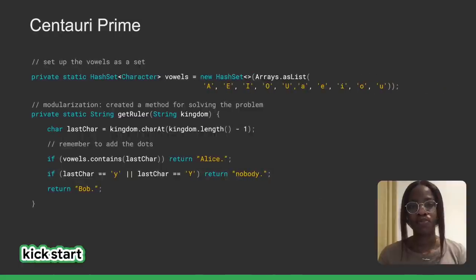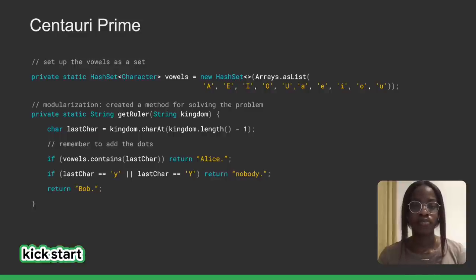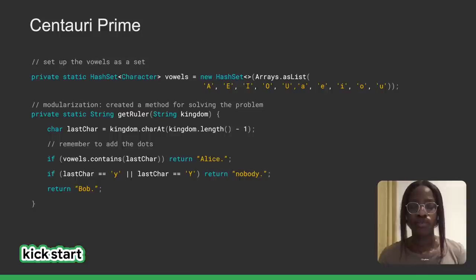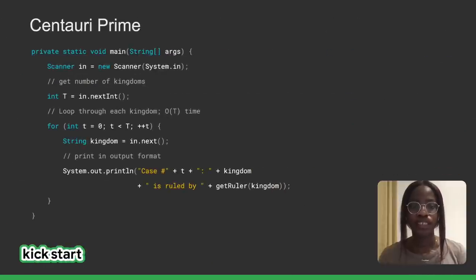I'm not satisfied with my proposed solution, so I move on to the code implementation. I used Java for the implementation, but you can use any of the supported languages on the platform. I initialized a hash set with the vowels, then I created a separate method, get ruler, that takes in the kingdom as input, gets the last character, compares it, and returns the ruler. Don't forget to test for the capital and small letter Y, since the kingdom's name can be a single letter. In the main method, I read in the input with the scanner, then loop through all of the kingdoms. For each kingdom, I call the get ruler method and print out the output in the specified format.